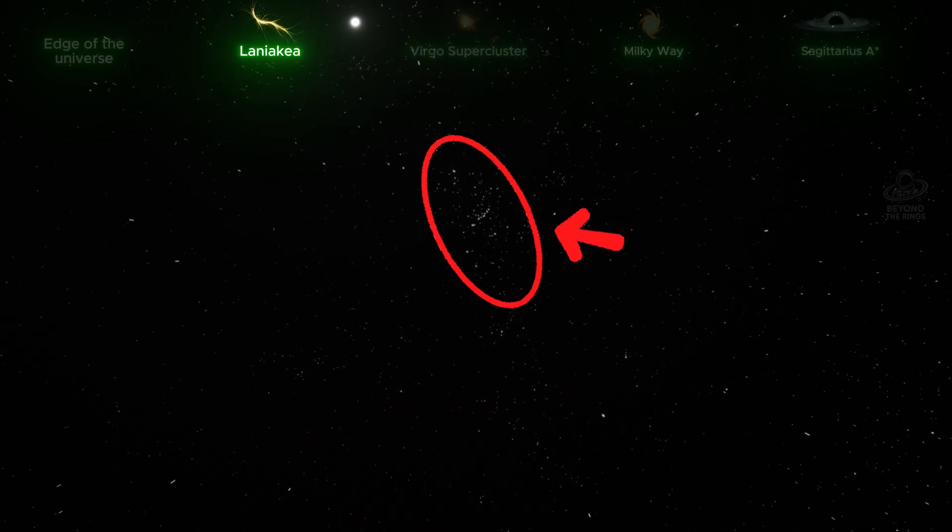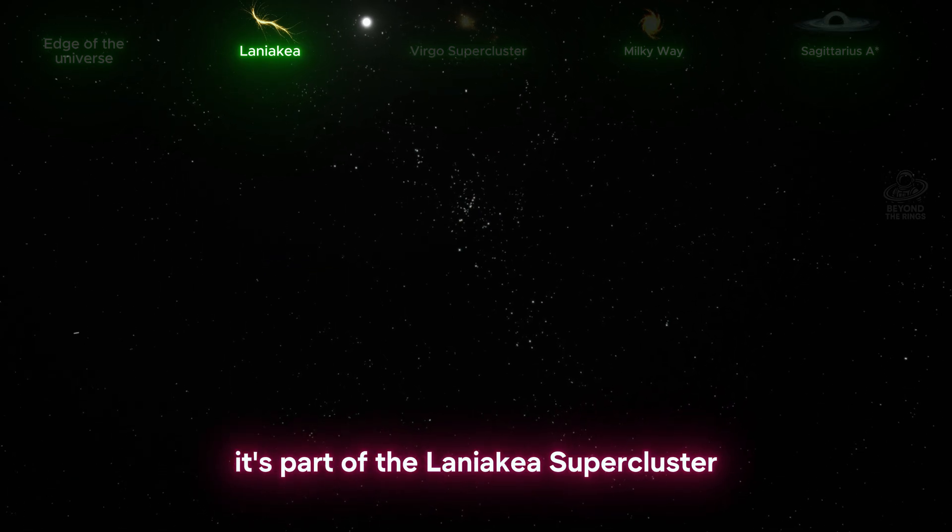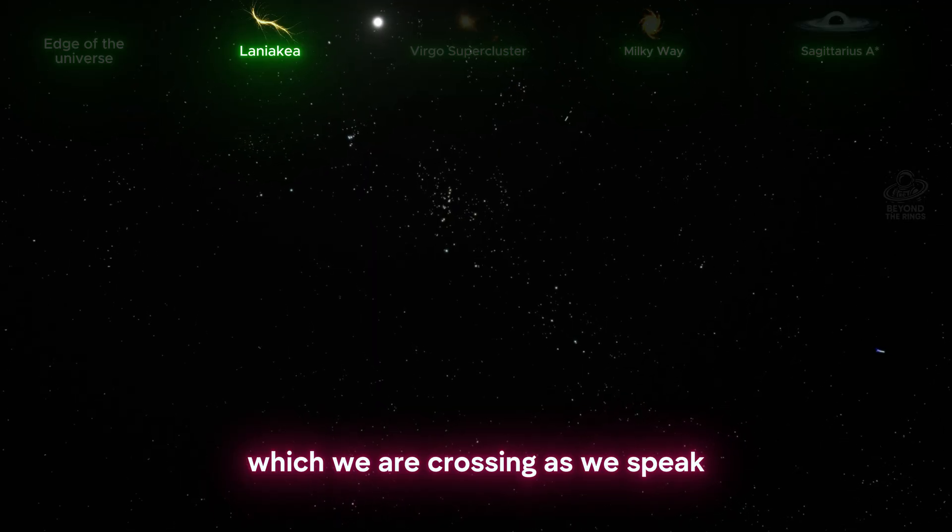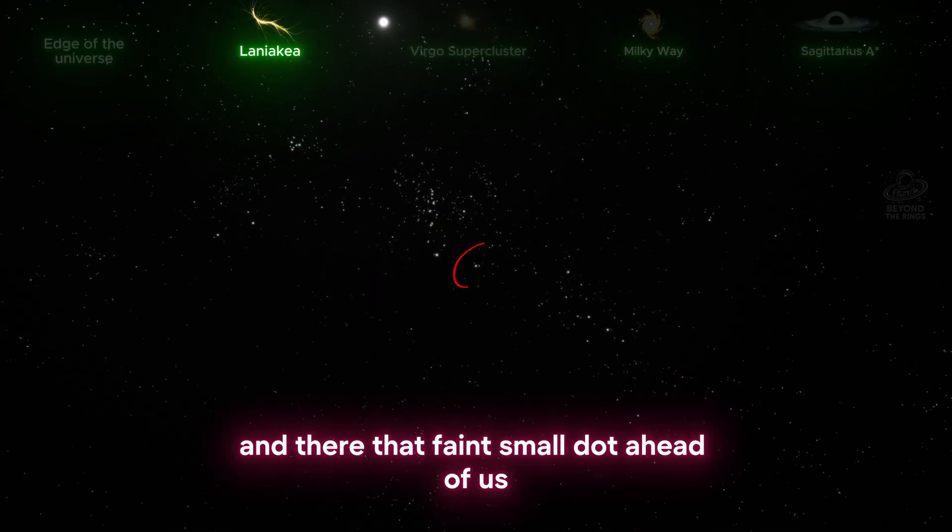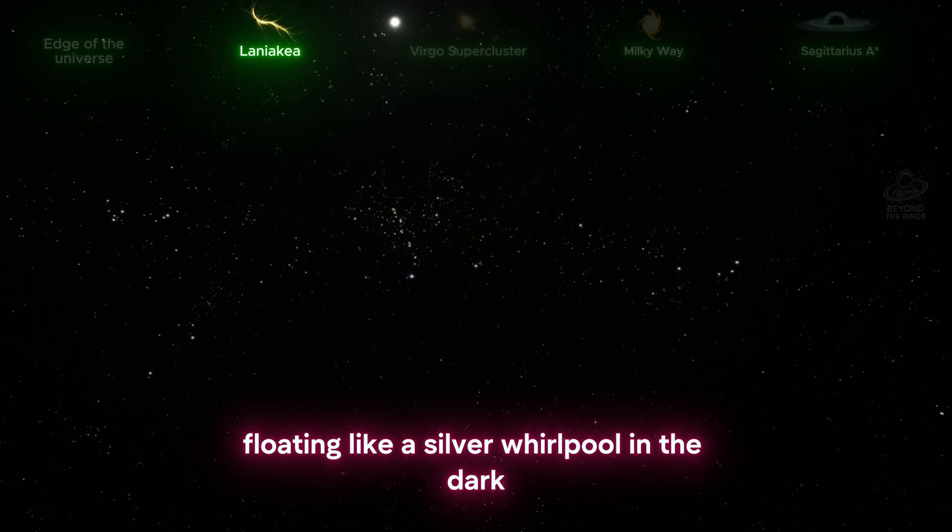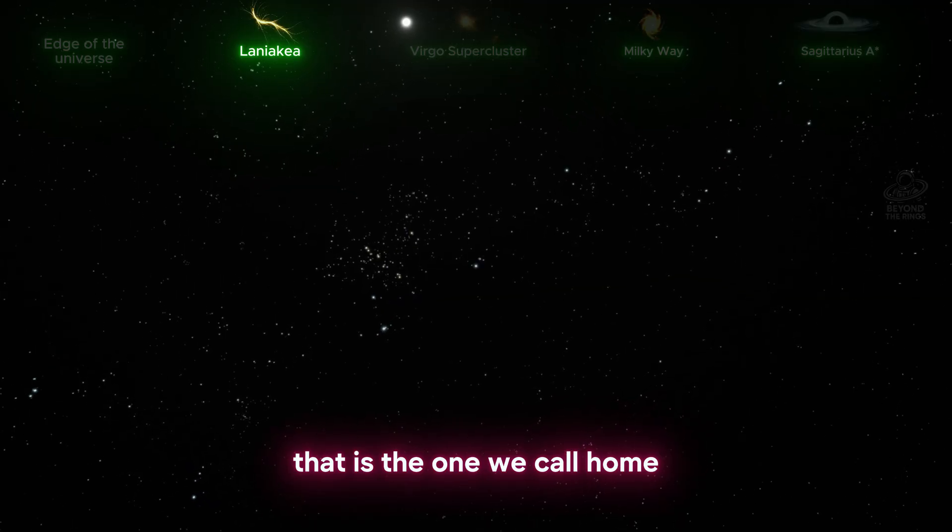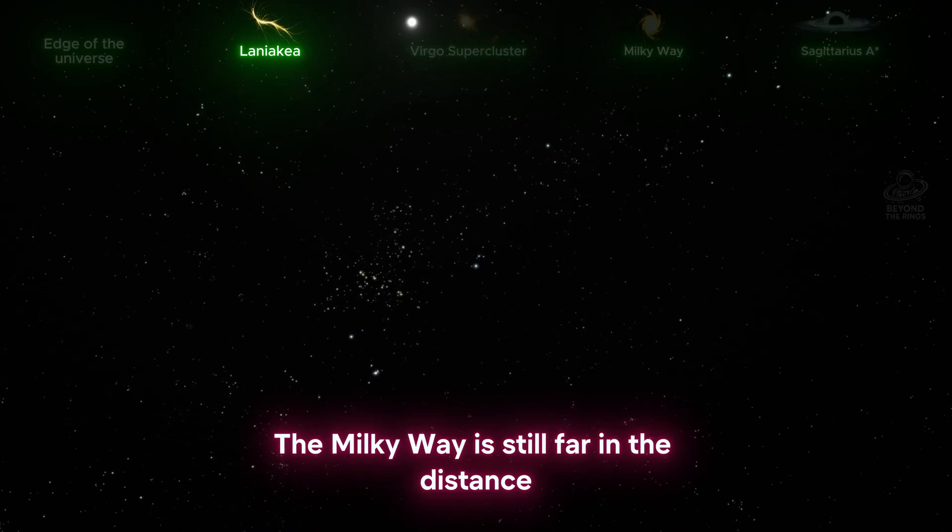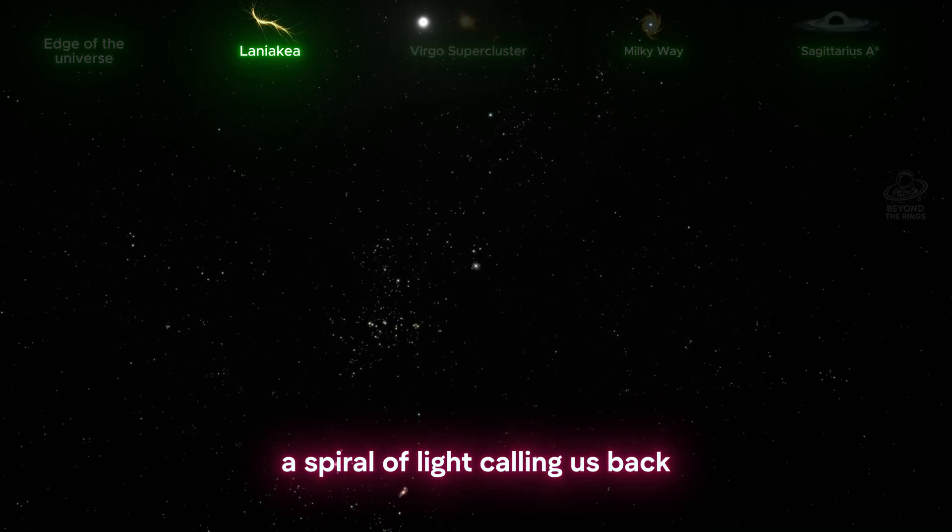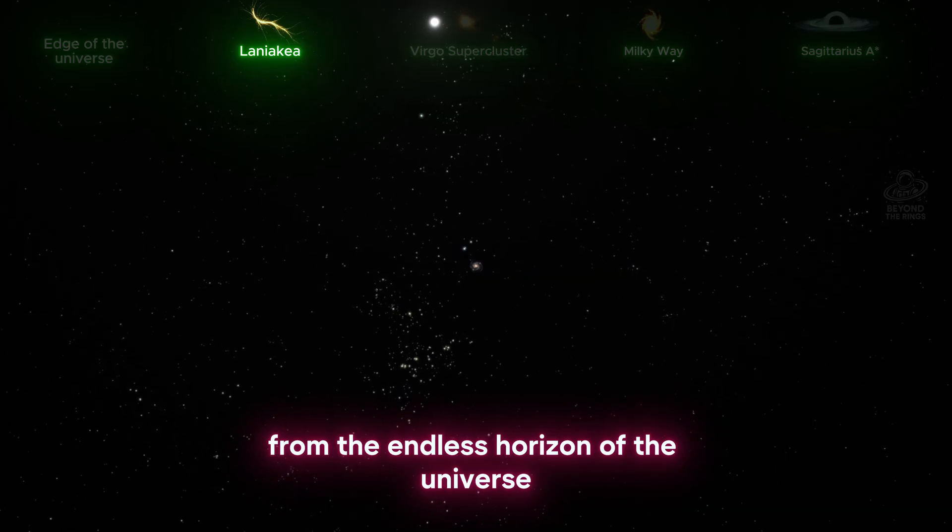That's our local group, what we call the Virgo Supercluster. It's part of the Laniakea Supercluster, which we are crossing as we speak. And there, that faint small dot ahead of us, floating like a silver whirlpool in the dark - that is the one we call home. The Milky Way is still far in the distance, but its shape is already emerging, a spiral of light calling us back from the endless horizon of the universe.